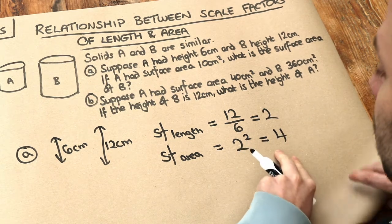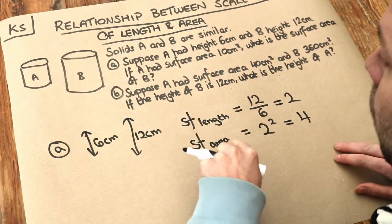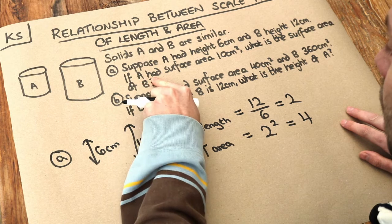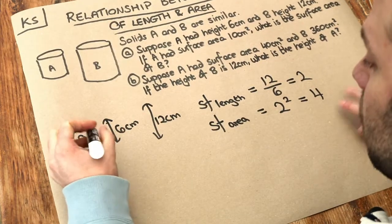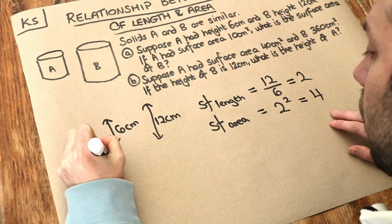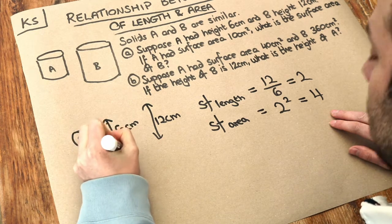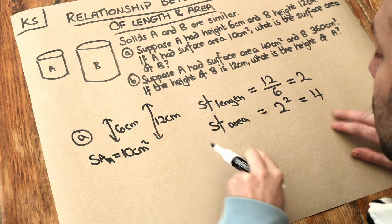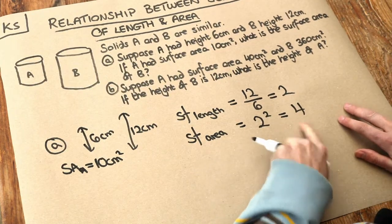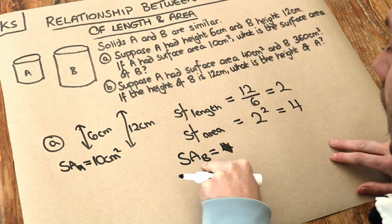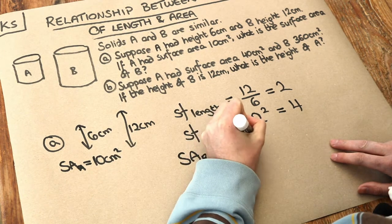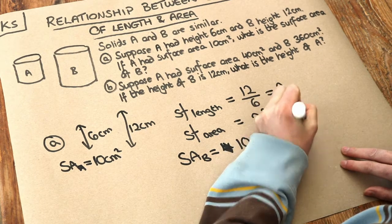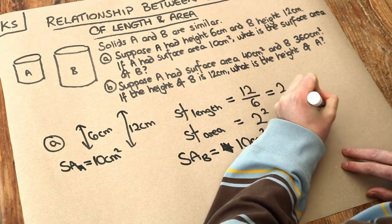Because we know the scale factor of area, we can scale any area we have to get from one solid to the other. We're told the surface area of A is 10 centimeters squared. To get the surface area of B we just need to multiply it by that scale factor of area. So the surface area of B is 10 centimeters squared multiplied by the scale factor of area 4, and that gives you 40 centimeters squared.